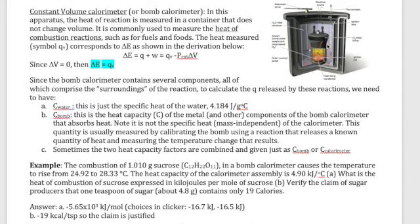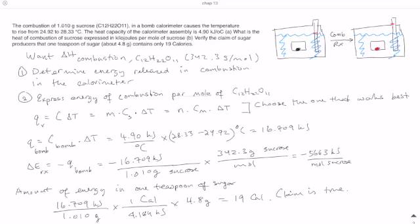There are two components to pay attention to: the water and the bomb calorimeter itself. The heat absorbed by the water can be calculated using mc delta T. For the bomb itself, you typically need to know the heat capacity of the metal and other components — plastic, metal, glass — which is given as one number, the heat capacity of the whole container. Multiply that by delta T to get q, then add the two q values to get the total heat from the combustion reaction.